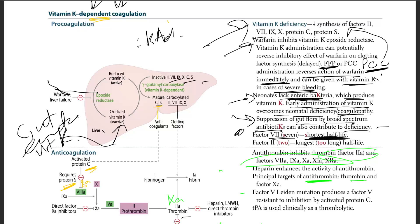Factor 5 Leiden mutation produces factor 5 that is resistant to inhibition by activated protein C. If you have this mutation, factor 5 becomes resistant to activated protein C inhibition — that's the Factor 5 Leiden mutation.